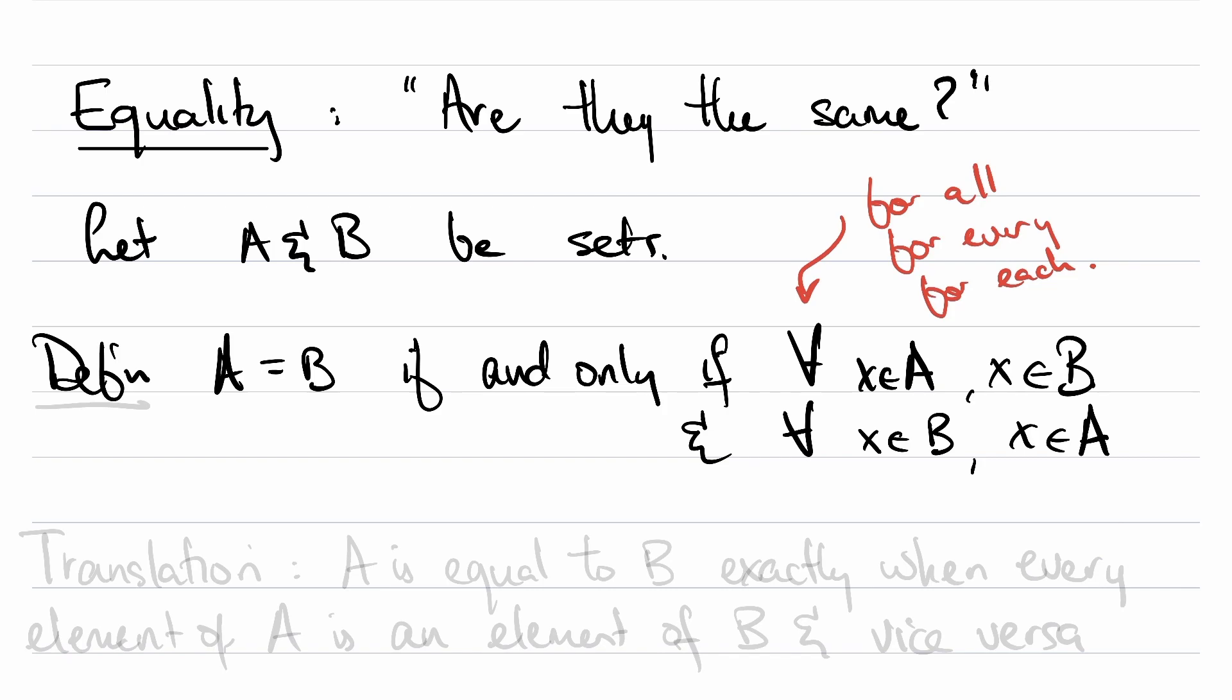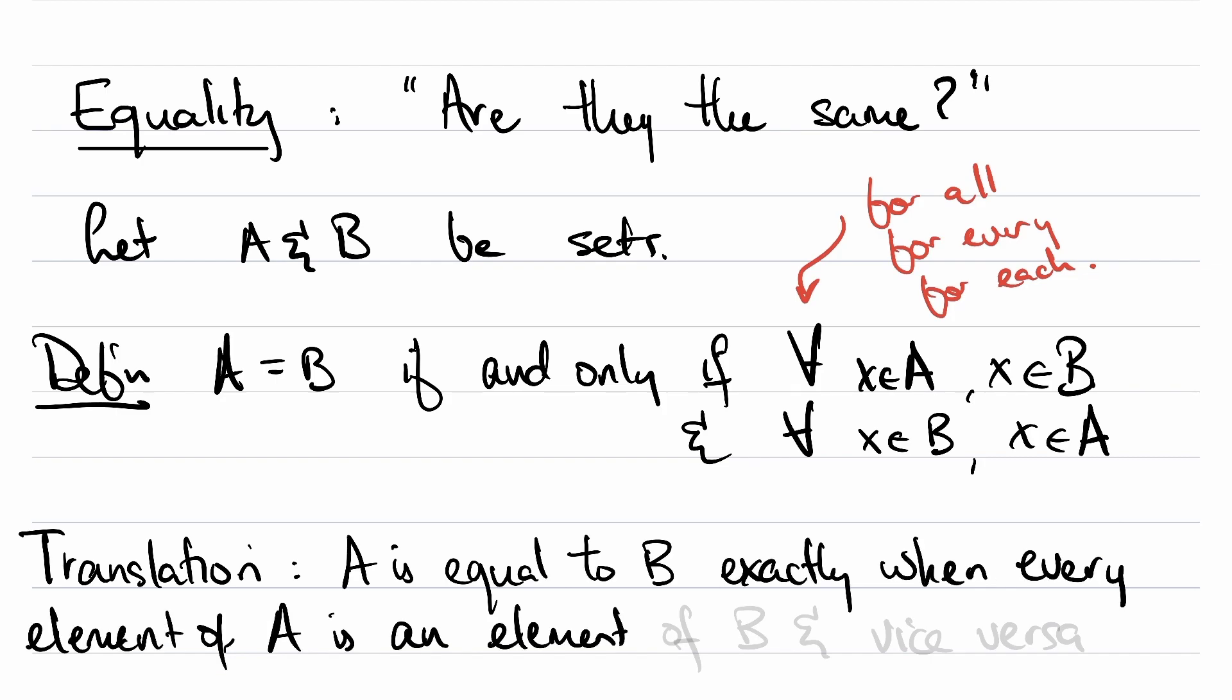So here's the translation of this definition. A is equal to B exactly when every element of A is an element of B, and vice versa, every element of B is an element of A.